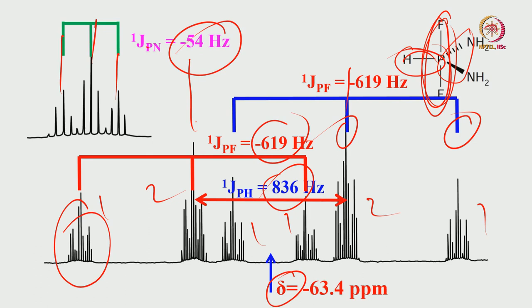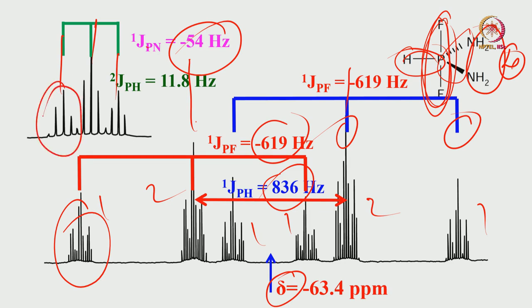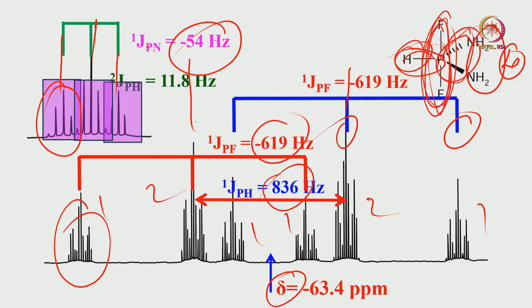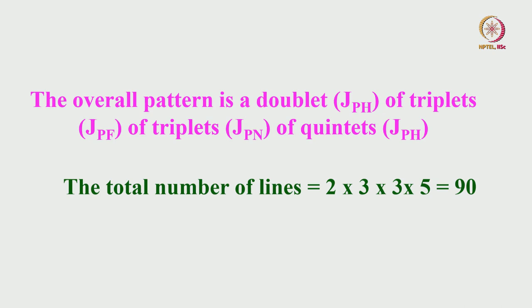Further, this phosphorus also experiences coupling with four equivalent protons from two NH2 groups. So you are going to get a quintet pattern. Each line of the triplet is further split into a quintet. This single phosphorus is experiencing one-bond couplings and two-bond couplings — so many couplings. The overall pattern is a doublet of triplets of triplets of quintets. The total number of lines expected is 90: 2 × 3 × 3 × 5. This one simple phosphorus gives 90 peaks, fortunately analyzable in a first-order way since all couplings are well dispersed.